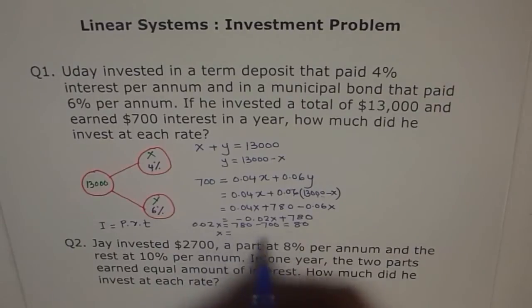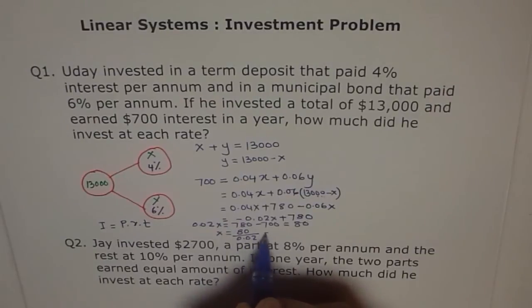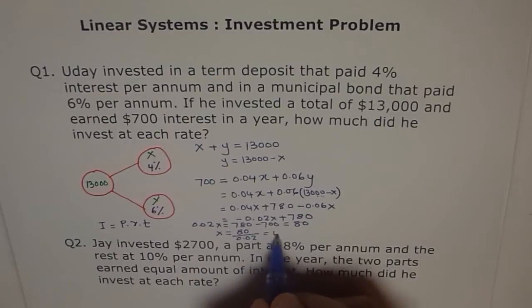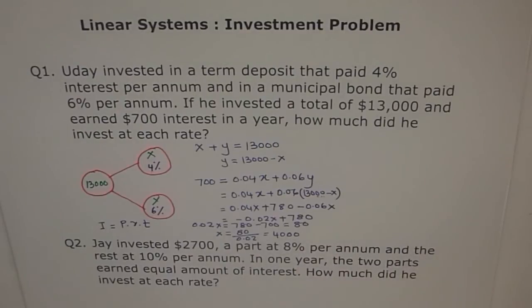Let 0.02X is equals to 780 minus 700, which is equals to 80. So, X is equals to how much? X is 80 divided by 0.02. When you do divide by 0.02, it means like you can 80,100 by 2. 80,100 by 2 is 40,100. 40,100 means 4,000. In this case. So, we got X as 4,000.